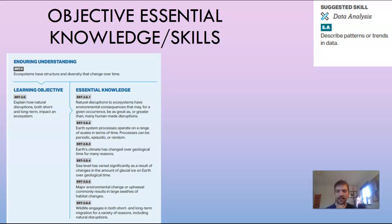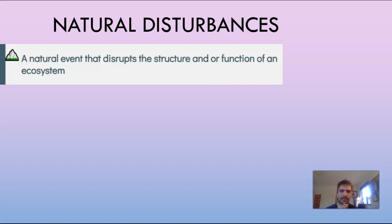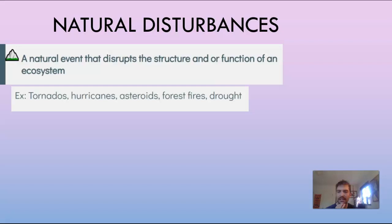A natural disturbance is a natural event that disrupts the structure and/or function of an ecosystem. For example: tornadoes, hurricanes, asteroids, forest fires, drought — anything that would really disrupt the structure, function, and how the ecosystem works. Here's an asteroid as an example.